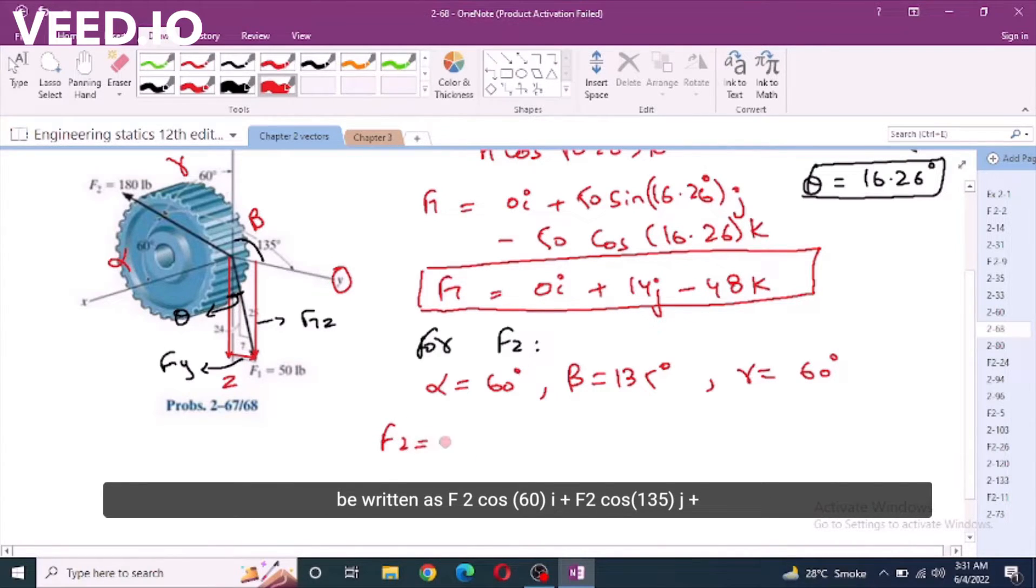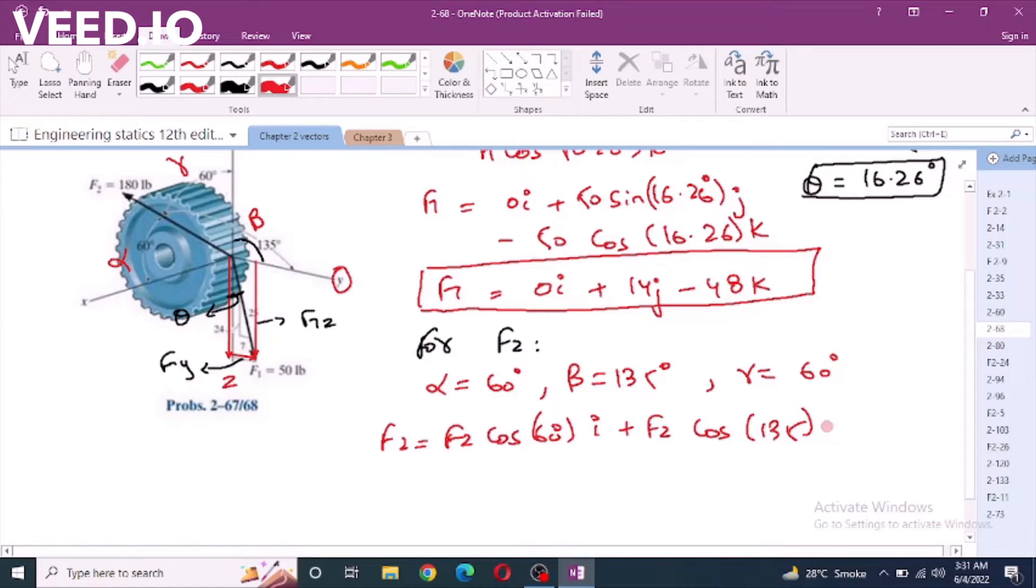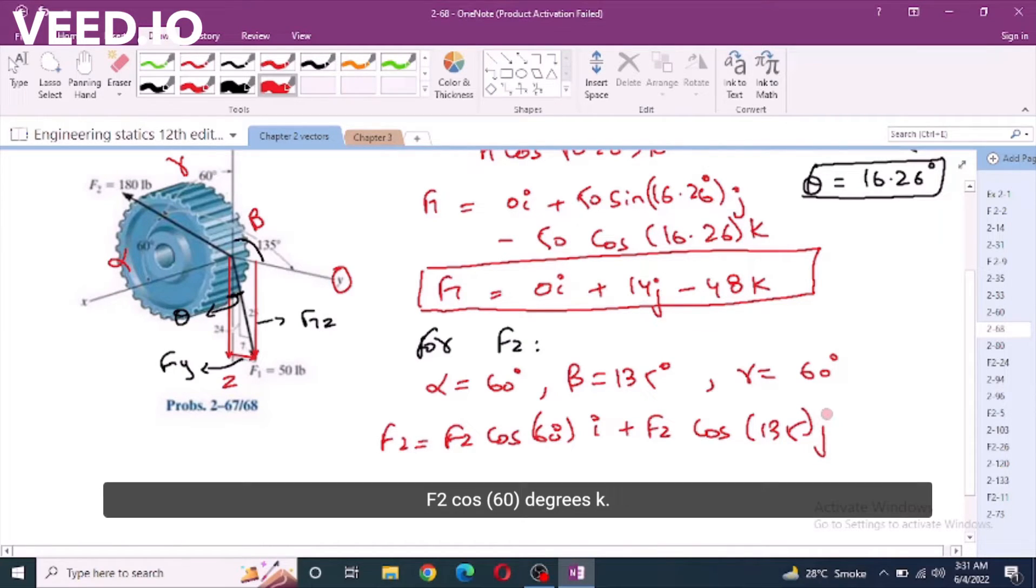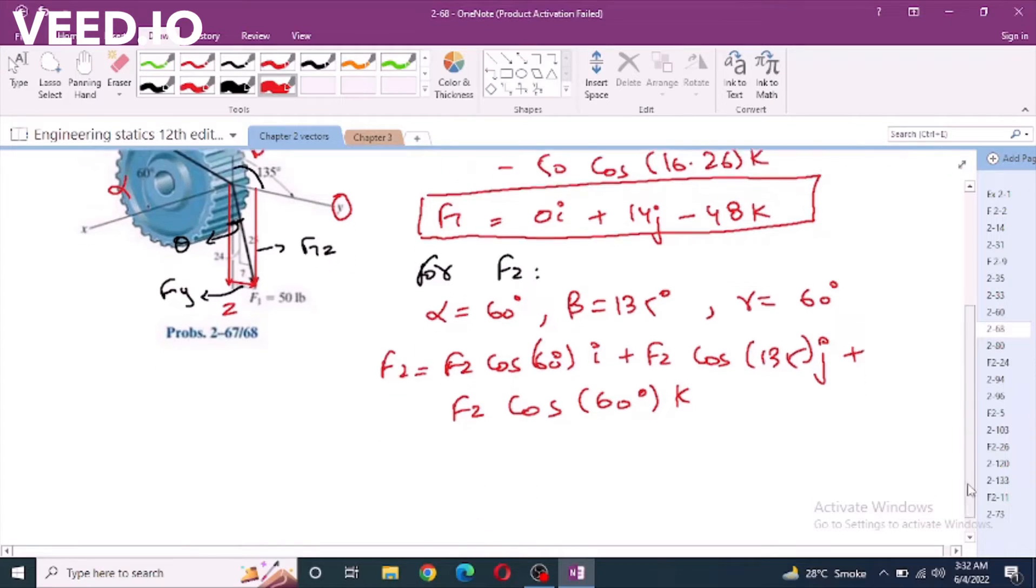F2 force can be written as f2 cos 60i plus f2 cos 135j plus f2 cos 60 degrees k.